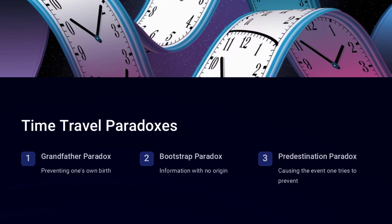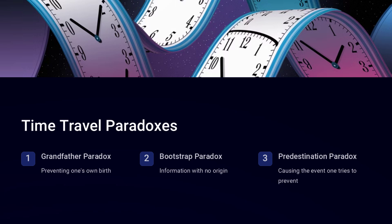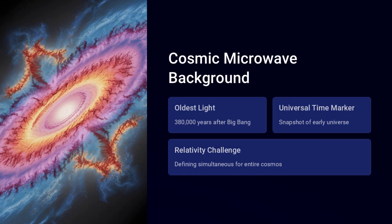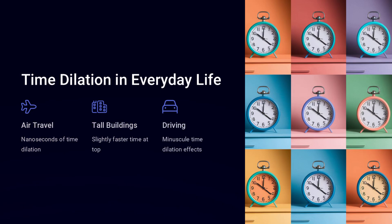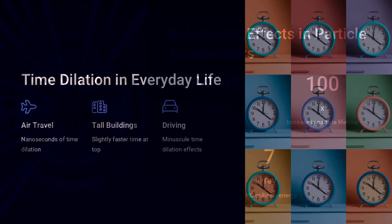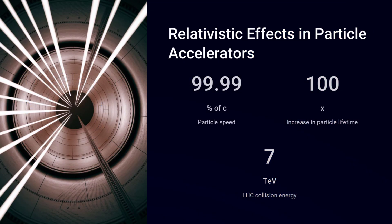The resolution of the paradox lies in understanding that relativity does not allow instantaneous cause and effect across space. Even though different observers have different slices of 'now,' they cannot influence the past or future in a way that leads to contradictions.